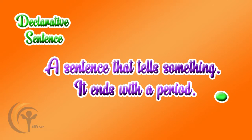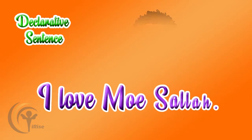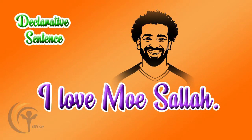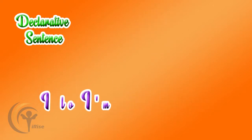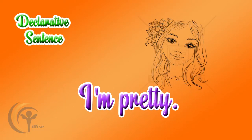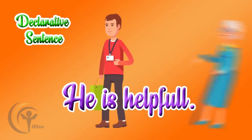An example of a declarative sentence would be if I say, 'I love mumsalah.' Here I'm just stating something — I'm telling people something. It's the same if I say, 'I'm pretty.' Here I'm just stating something that I believe about myself. Or if I say, 'He is helpful.'